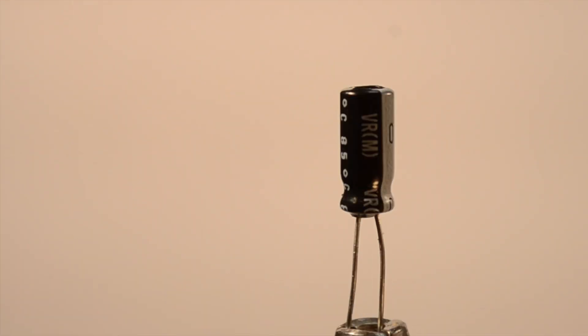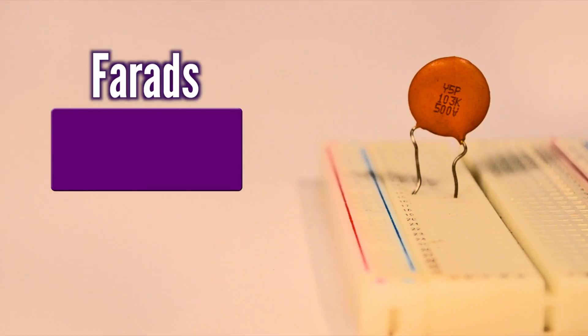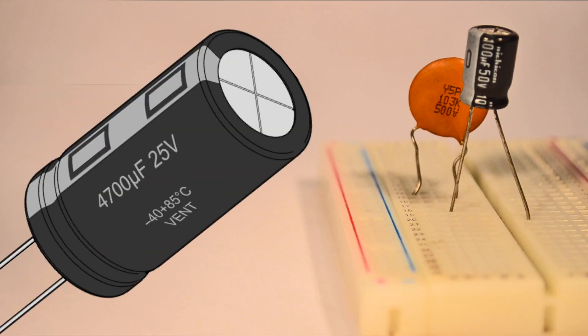Capacitors' ability to store electrical energy is known as capacitance, and this capacitance is measured in units called farads. Common values like micro, nano, or picofarads are printed on the side of capacitors to help identify them.